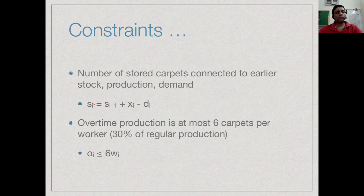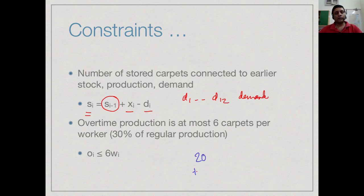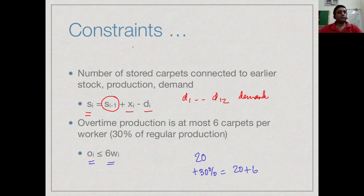The stock balance constraint connects storage across months: si equals si-1 plus xi minus di, where di is the known demand for month i. The quantity xi minus di represents the surplus or deficit produced that month added to the prior stock; si must always be non-negative since we cannot have negative carpets. Finally, overtime output oi must be at most 6 times wi, since a worker can do at most 30 percent overtime on top of their regular 20 carpets.